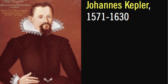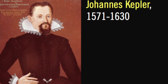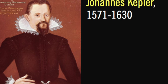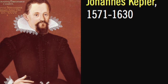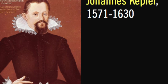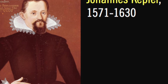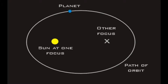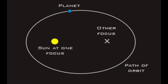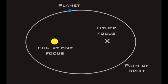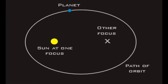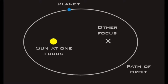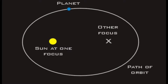It all starts with a scientist in the 16th century named Kepler. He wrote three laws about planetary motion. The first one says orbits are ellipses with the center of mass of the system at one focus. His third law says the wider the orbit, the longer it takes to complete. So if we look at this picture, the planet closest to the sun has the faster orbit, and the one furthest from the sun has the slower orbit.